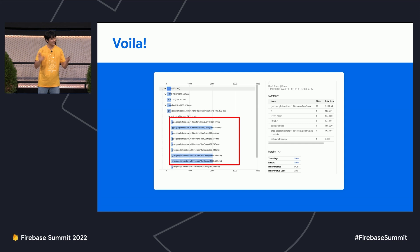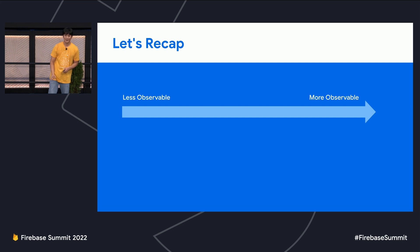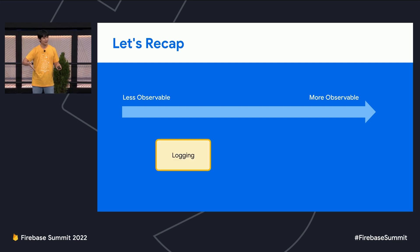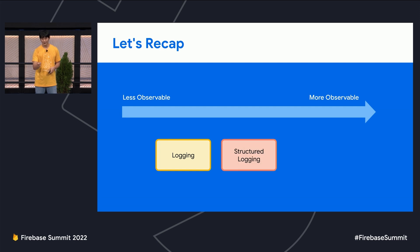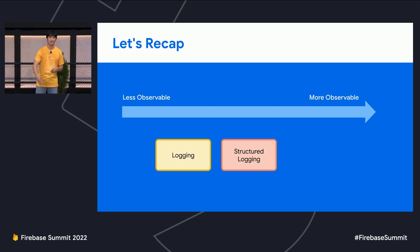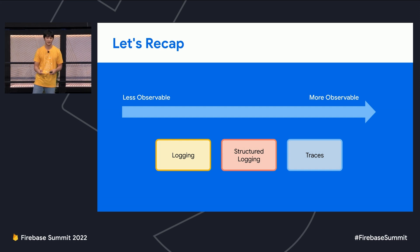Suna is happy, the PM is happy, everyone's happy. Let's quickly recap: we started from a black box, added some logging to make it more observable, added structured logging to leverage machines. Using Cloud Logging to understand structured logs, we can make custom metrics. Finally, we used OpenTelemetry to generate traces, which actually gave us the clues we needed to debug our production issue.